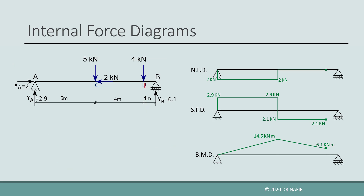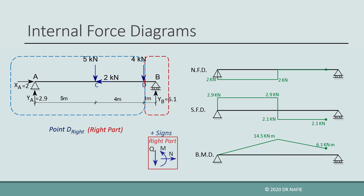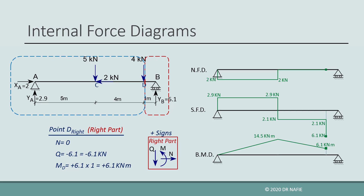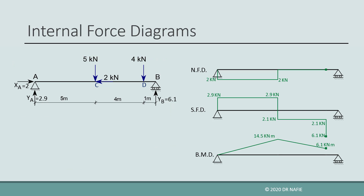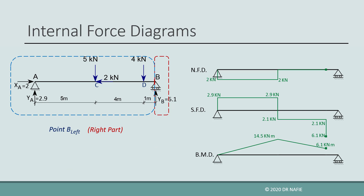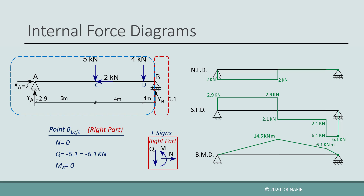In the next step, we move to the point just to the right of point D, still working on the right part. The normal force remains zero. For this point we have only one vertical force in the right part, which is YB, giving a shear value of −6.1 kN. The bending moment is +6.1 kN·m as in the previous point. In the last step, we work on the point just to the left of B: the normal force is zero, the shear force is −6.1 kN, and the moment is zero. After connecting all the calculated values, the final diagrams are produced as shown.